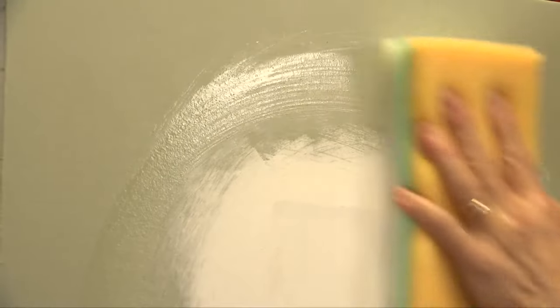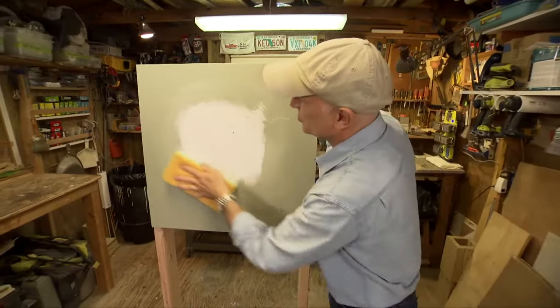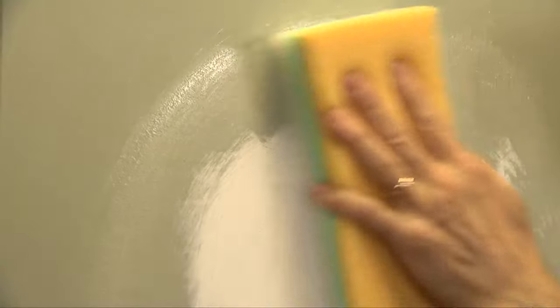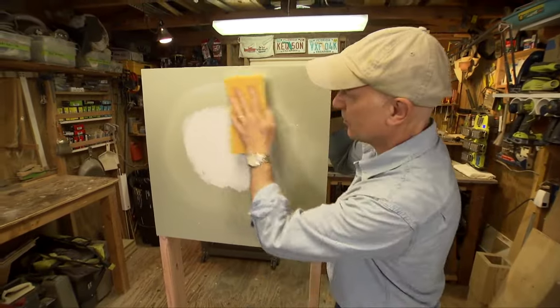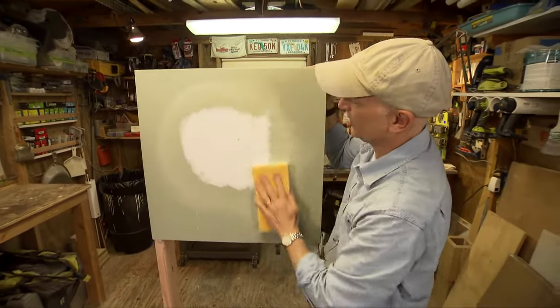You can see how quickly and easily it starts to dissolve the joint compound. Now this is perfect when you're patching a hole in drywall, maybe made by a doorknob or something like that. You wouldn't want to do an entire wall with it, but it's great for small patches like this one.